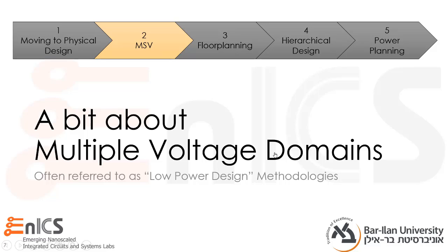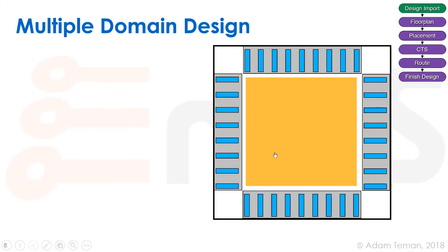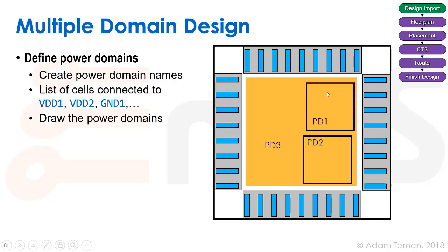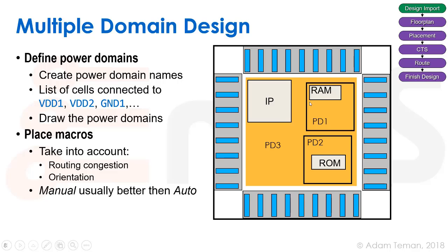Having discussed low-powered design, let's go deeper into multiple voltage domains. In a multiple domain design, we have a floor plan with a basic core area split into several power domains. We first create power domain names and a list of cells connected to them and their physical locations — power domain 1, power domain 2, power domain 3 — telling the tool which power domain each cell is associated with. We also have to place macros: a RAM in power domain 1, a ROM in power domain 2, and an IP block in power domain 3.